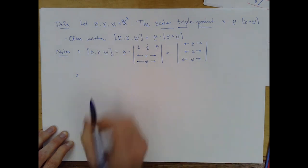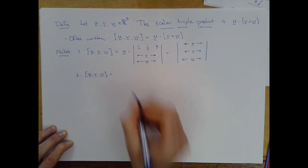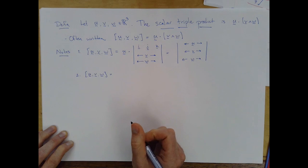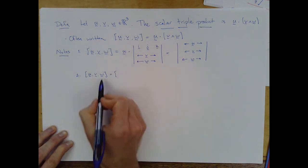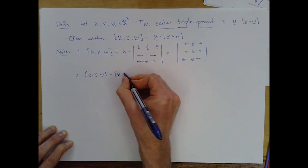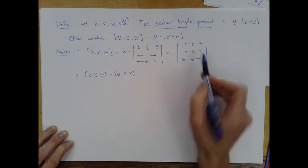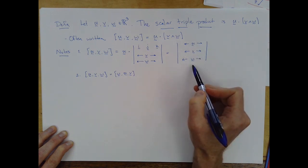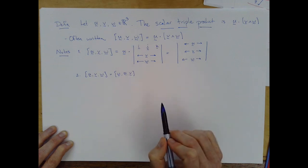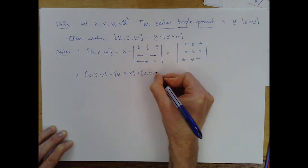Statement two, the order u v w matters, but only if we change only two of them. So if we cycle the order, we get the exact same quantity. So in other words, if I imagine shifting each of them one to the right, so w comes up front, w u v, I get exactly the same thing, which you might understand from properties of determinants. Switching the rows of a matrix in that sort of cyclic form doesn't change the determinant. And so this would also be the same as v w u.